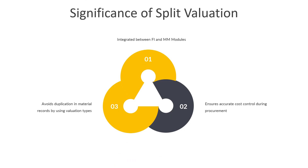What is the significance of split valuation in the procurement process? The procurement process in the MM module starts with a purchase requisition or a purchase order and ends with the confirmation of the goods receipt. A significant aspect of this process is material valuation, which is closely integrated with the financial accounting module. Material valuation in SAP MM affects how transactions are updated in the respective GL accounts, making it a critical part of financial management. Split valuation ensures that cost differences from different sources or varying conditions are accurately captured, allowing for more precise cost control and financial reporting. This is particularly important for organizations where material is both purchased and produced in the same plant, and it avoids the redundancy of maintaining multiple material master records just to manage different costs.